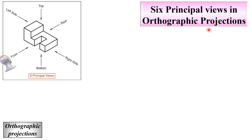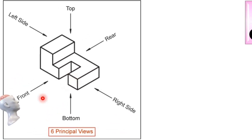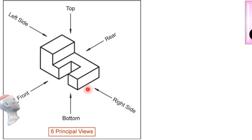There are six principal views of any object in orthographic projections. If the observer is looking from the front side, that is the front view. From the top side it is called the top view, and exactly opposite is the bottom view. Opposite to the front view, from the back side, is the rear view. From the right side it is called the right hand side view, and from the left side it is called the left hand side view. These are the six principal views of any object.